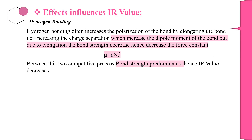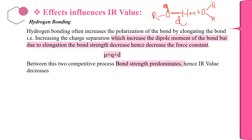Hydrogen bonding also often increases the polarization of the particular bond by elongating it. Since the alcohol hydrogen undergoes hydrogen bonding with the surrounding water molecules, the bond becomes polar in nature. Due to this polarity, the charge q is increasing and the bond length (distance d) is also increasing. Using the dipole moment formula μ = q × d, since both q and d are increasing, the dipole moment is also increasing.